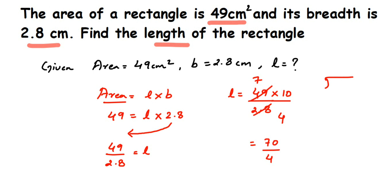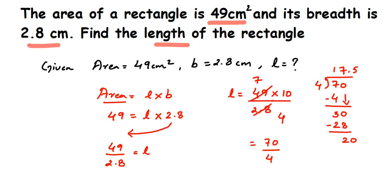I'm dividing here because the answer is in decimal and I want to show how we get it. 4 ones are 4, so 7 divided by 4 gives 1 with remainder 3. Bring down 0 to get 30; 4 sevens are 28, remainder 2. Place the decimal and bring down 0 to get 20; 4 fives are 20. So the answer is 17.5.